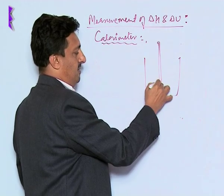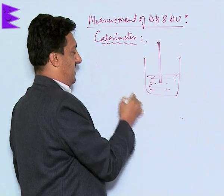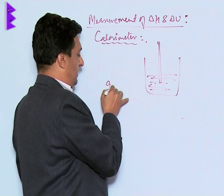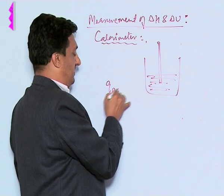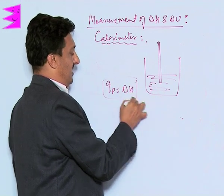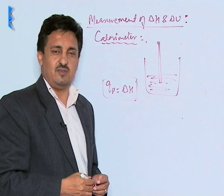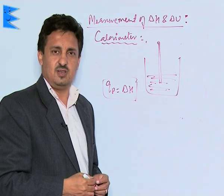So we use a normal open vessel with a thermometer, and in that case whatever heat q is given out is equal to ΔH. This is how we can find out the values of ΔH and ΔU.